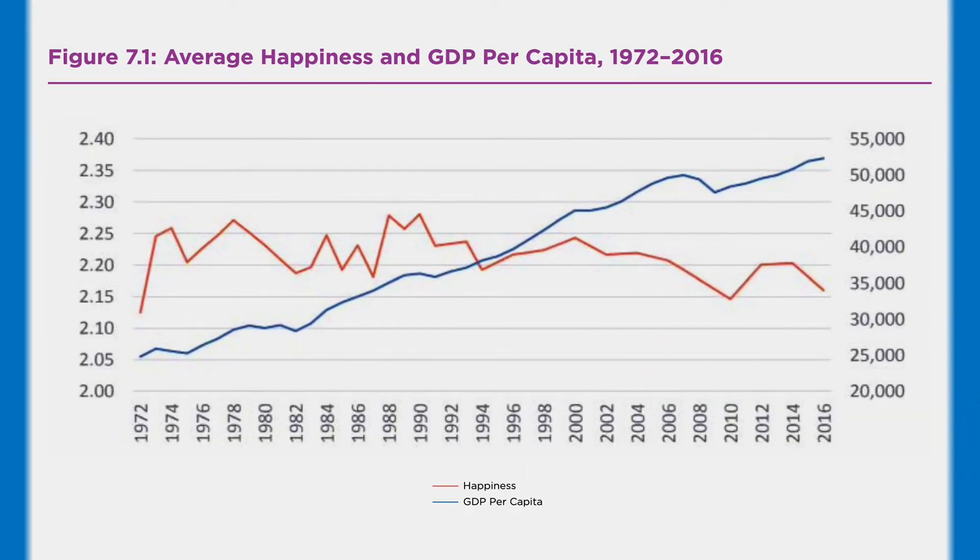In the US, for example, happiness peaks in the late 1980s, and since then has steadily declined. So what causes this gradual separation between happiness and GDP?